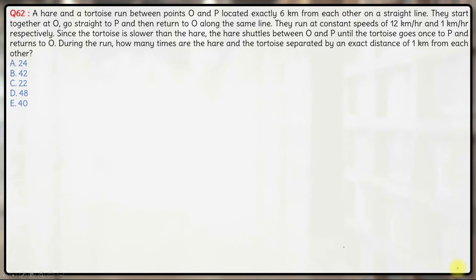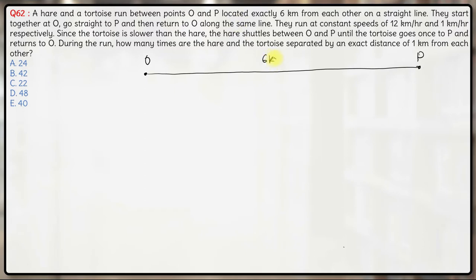This is a slightly difficult question — you might miss out one or two cases and the answer will go wrong. So here we have a hare and a tortoise running between points O and P, located 6 kilometers apart on a straight line. They start together at O, go straight to P, and then return to O. They run at constant speeds of 12 kilometers per hour and 1 kilometer per hour respectively.